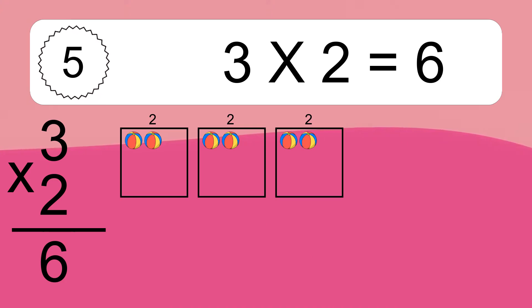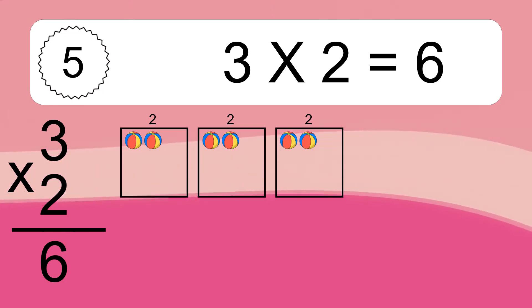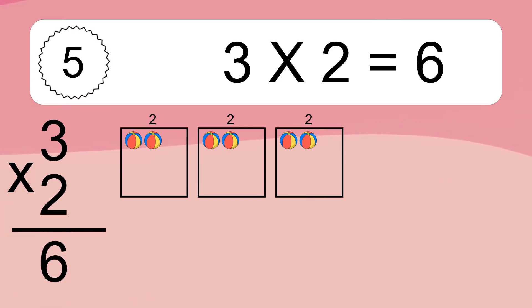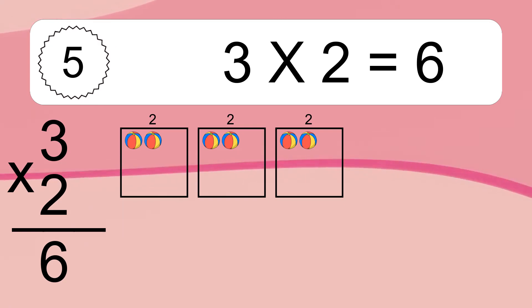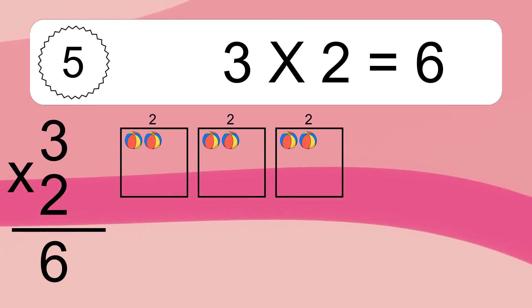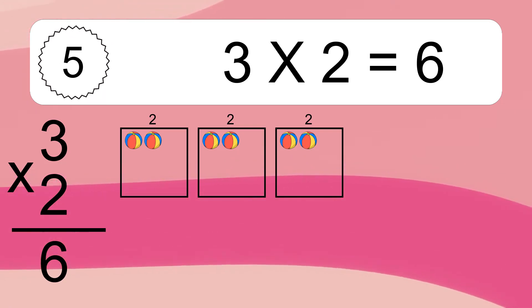We have 3 boxes, and each box has 2 colorful balls inside. If you count all the balls in all the boxes together, you will have 3 times 2 balls. This equals 6 balls.